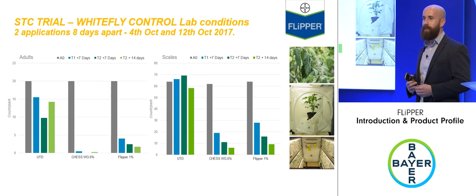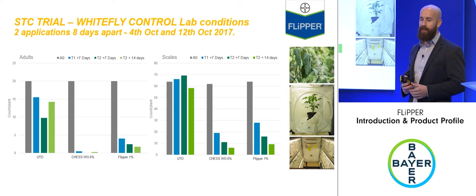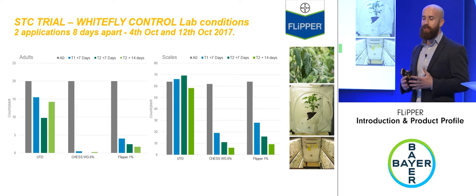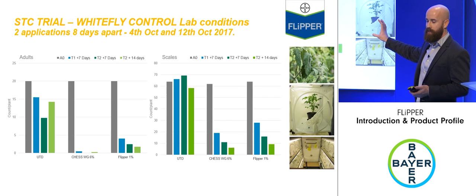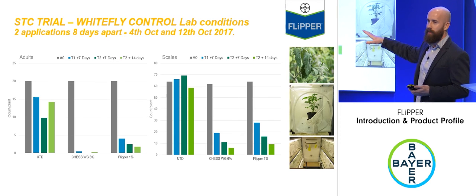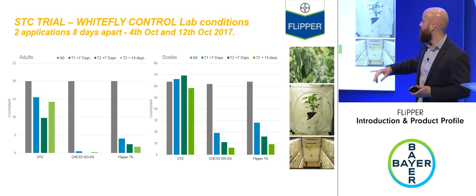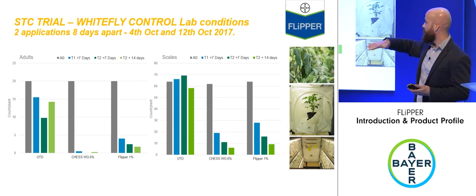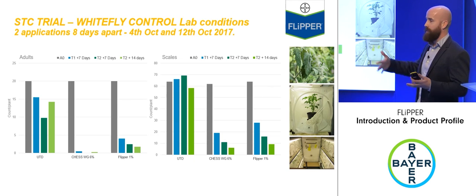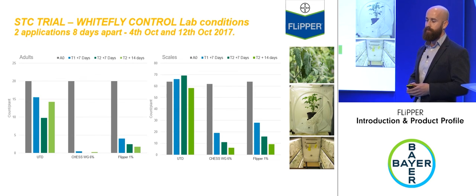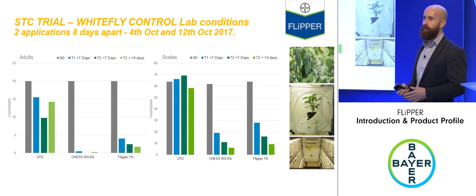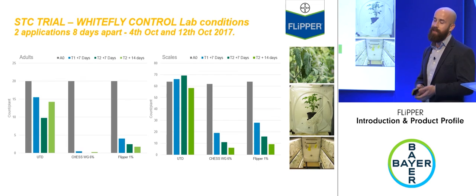Work done with Stockbridge Technology Centre in 2017 examined Flipper's activity on all stages of the whitefly life cycle. On the left, the effect on adults; on the right, activity on scales, with each bar representing a count over time. Untreated adult levels remained fairly even. A conventional chemistry had a good impact on adults; Flipper had a really remarkable impact on adults over time, and exactly the same story for whitefly scales. The trial was effectively a glasshouse trial, despite being described as lab conditions.